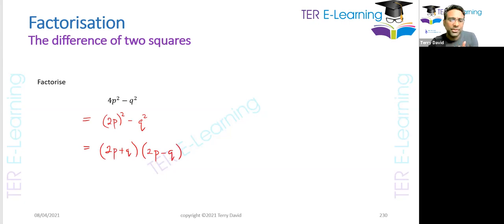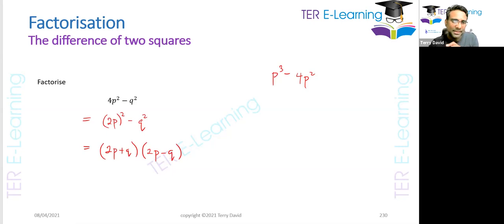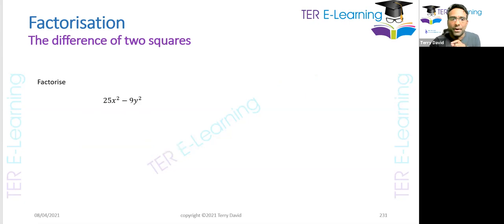To identify when to use the difference of two squares, I must have a minus sign, I must have two terms, and both terms have to be square variables. For example, I can't use this method with something like p cubed minus 4p squared. Yes, I have two terms and a minus sign, but p cubed is not a square variable. In that case, I would have to use the HCF method to factorize.